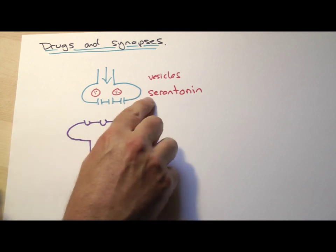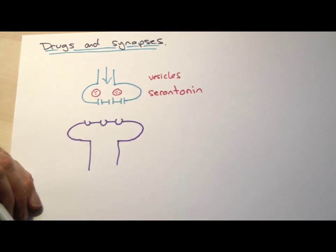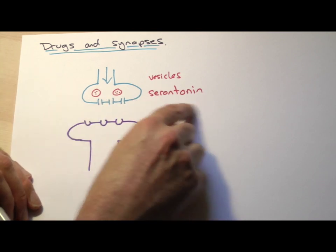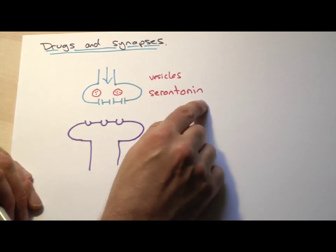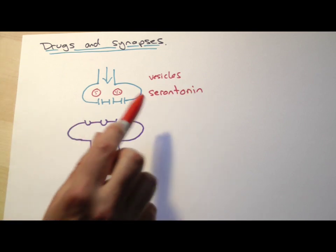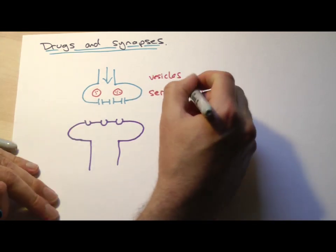This particular neurotransmitter we're interested in here is called serotonin. It is found in the brain, it's found in other places in your body as well, but we're interested in its effects in the brain. Now, interestingly, this is associated with the condition of depression.